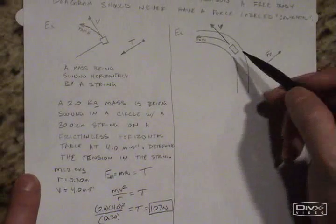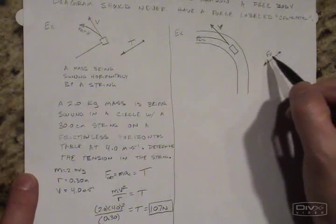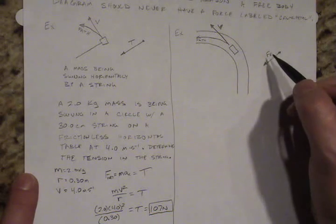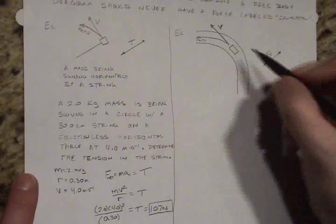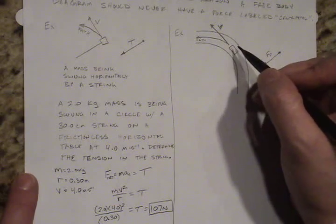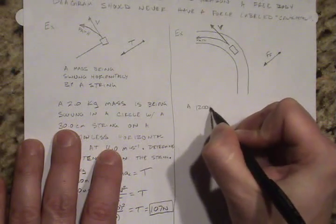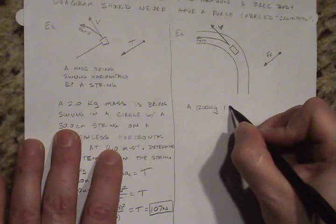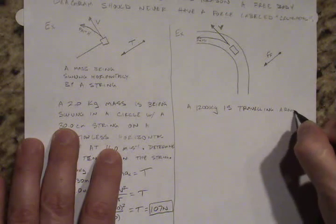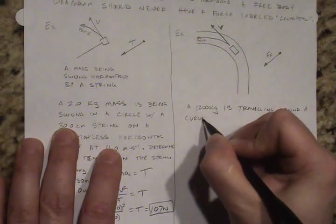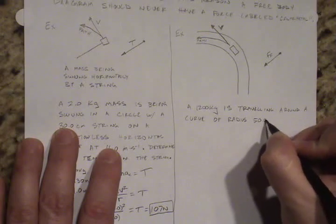Let's go ahead and move back to the more interesting example, the car going around the road. Let's make this problem a little more interesting. Let's not just look for the frictional force, I'll actually give you the frictional force. What we frequently would like to know is if we know what the frictional force between the car's tires and the road is, how fast can I go around the turn and not slide off. Let's make the car 1200 kilograms, that's a typical value for a car, traveling around a curve of radius 50 meters.